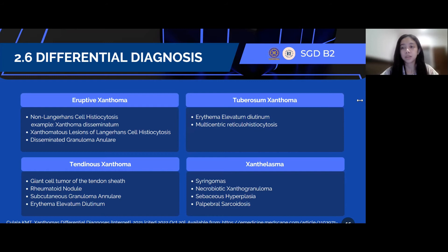For the tuberous Xanthoma type, we should differentiate it from erythema elevatum diutinum, syringomas, necrobiotic xanthogranuloma, sebaceous hyperplasia, and palpebral sarcoidosis with Langerhans cell histiocytosis. For tendinous Xanthoma, we should distinguish it from giant cell tumor of the tendon sheath, rheumatoid nodule, and subcutaneous granuloma annulare. And lastly, we should differentiate the Xanthelasma type from syringomas, necrobiotic xanthogranuloma, sebaceous hyperplasia, and palpebral sarcoidosis.